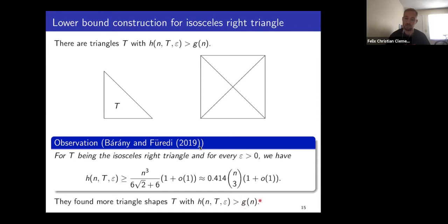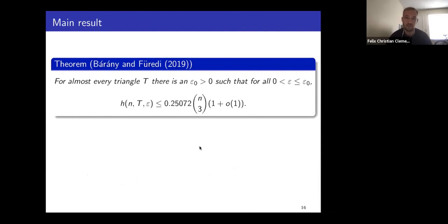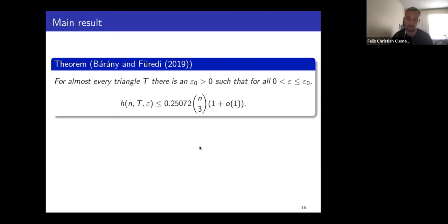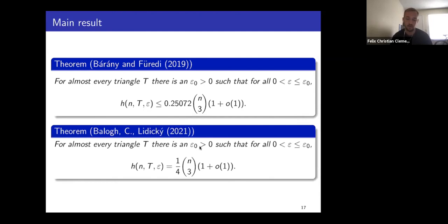Yet they believed that for most triangle shapes the answer should be g(n) ≈ n³/4. They proved that for almost every triangle shape T, as long as ε is small enough, the maximum number of ε-similar triangles is very close to one quarter of n-choose-3, indicating the right answer for almost all triangles is one quarter. Our contribution is that we prove exactly one quarter. Our result is that for almost every triangle shape T, with ε small enough, the maximum number of ε-similar triangles in an n-point set is exactly given by that lower bound construction. We also have an exact result when n is a power of three.